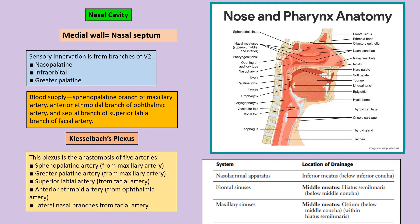We can see the different boundaries of the nasal cavity, but the medial wall of the nasal cavity — made up of the nasal septum — is the most important. The maxillary sinus drains into the middle meatus of the nose, and the nasolacrimal apparatus drains into the inferior meatus of the nose.